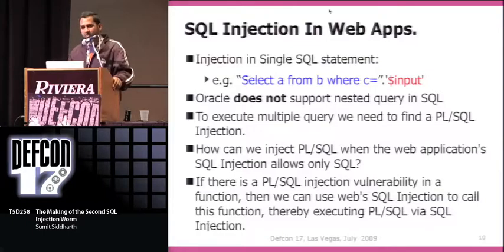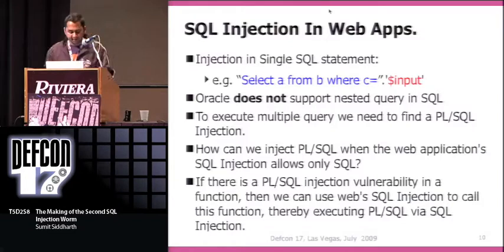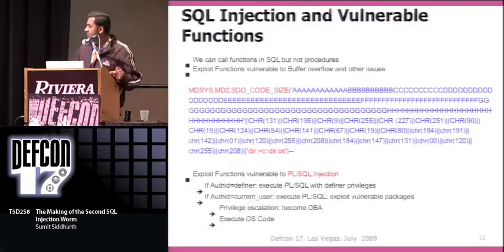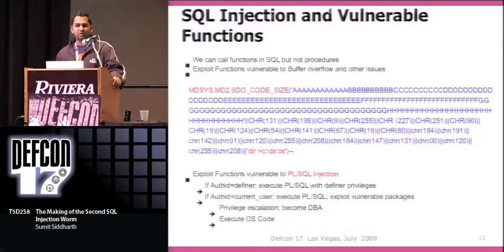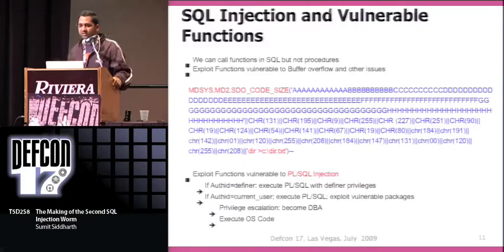One way to inject PL/SQL inside SQL is to call a function that is itself vulnerable to PL/SQL injection. You pass the PL/SQL as an argument to that function and call it in your SQL. This is not very new — at Black Hat 2005, someone touched on this. There are also functions vulnerable to buffer overflow that you can call in SQL. One example shown at the 2005 Black Hat talk was a function vulnerable to buffer overflow where you could directly execute commands with system privileges.